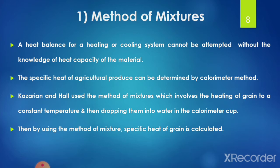Starting with the method of mixture: a heat balance for a heating or cooling system cannot be attempted without knowledge of the heat capacity of the material. The specific heat of agricultural produce can be determined by the calorimeter method. Scientists Kazarian and Hall used the method of mixture, which involves heating a grain to a constant temperature and then dropping it into water in the calorimeter cup. Using the method of mixture, the specific heat of grain is then calculated.